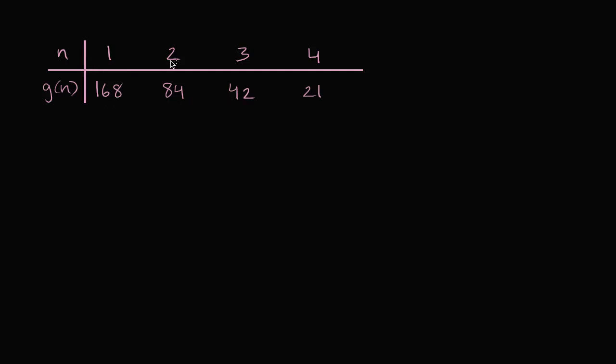So this table here, we were given a bunch of n's, n equals one, two, three, four, and we get the corresponding g of n. And one way to think about it is that this function g defines a sequence where n is the term of the sequence.